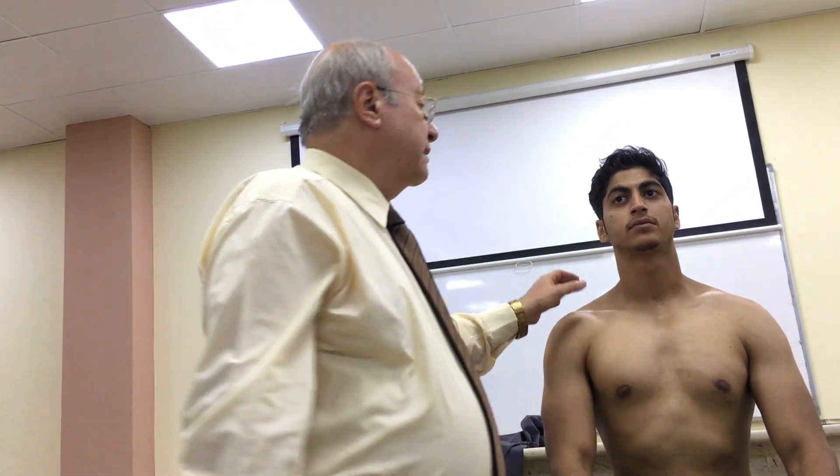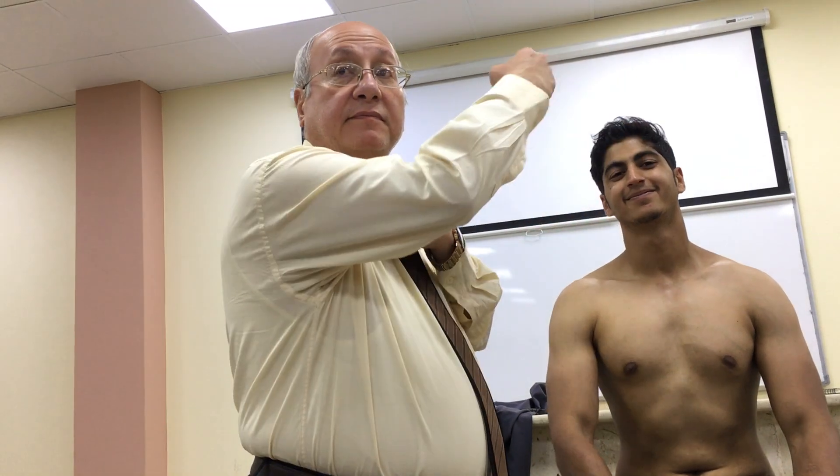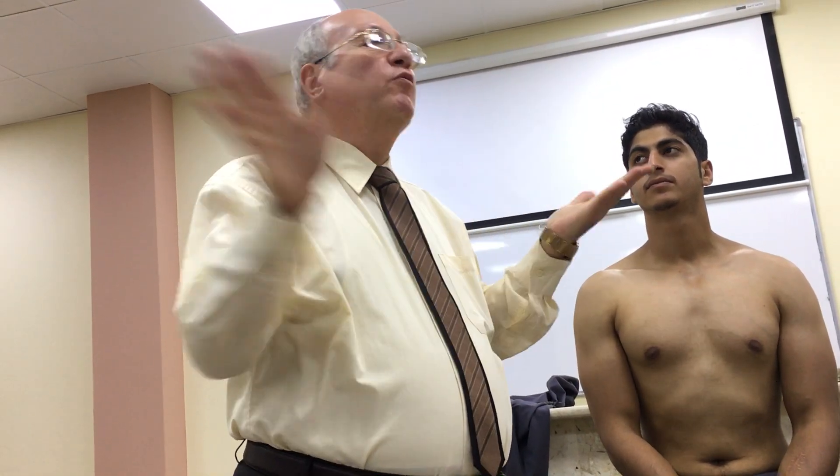The most important thing in inspection is examination of function — that is, movement. The most important part of inspection is active movements, which are movements carried out by the patient. The shoulder joint is a ball and socket joint, and its movements include flexion, extension, abduction, adduction, internal rotation, external rotation, and circumduction. You should teach the patient how to perform each movement.